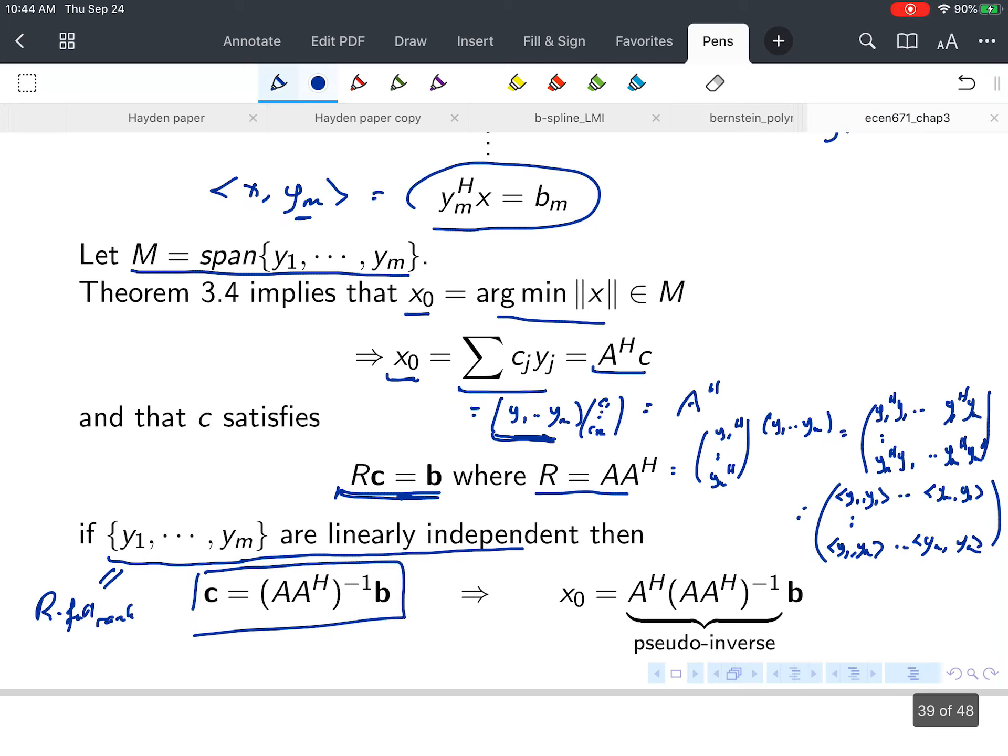The coefficients are c equals (AA^H)^(-1) b. Plugging this back into x equals A^H c, we get that the min-norm solution is x₀ equals A^H(AA^H)^(-1) b. This is another pseudo-inverse.